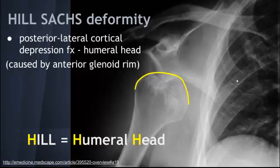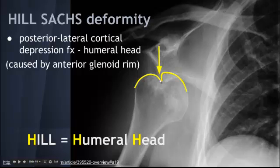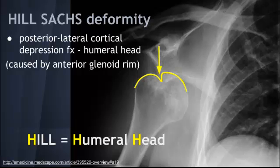The Hill-Sachs deformity is a posterior lateral cortical depression fracture of the humeral head, caused by the anterior glenoid rim impacting the humeral head as it dislocates. A helpful mnemonic: since the Hill-Sachs deformity involves the humeral head, they both start with H. The bony Bankart lesion and the Hill-Sachs deformity are the two key associated bony injuries to remember.